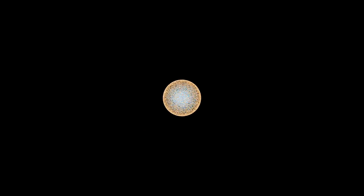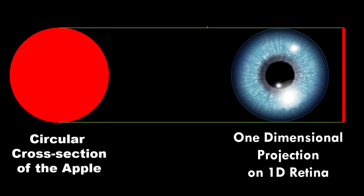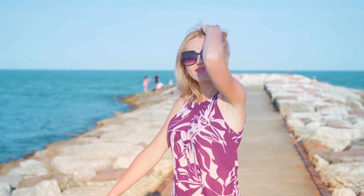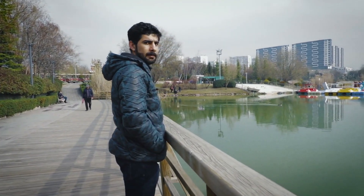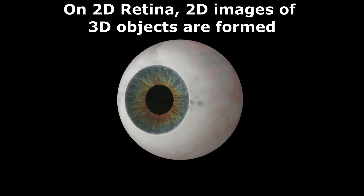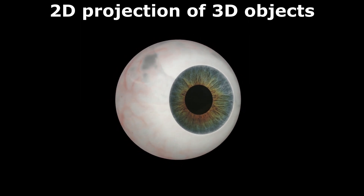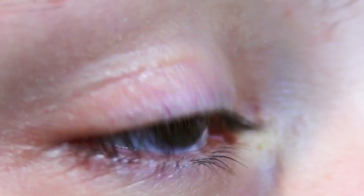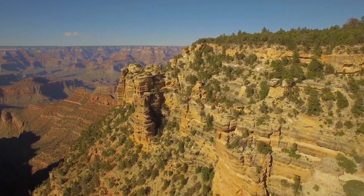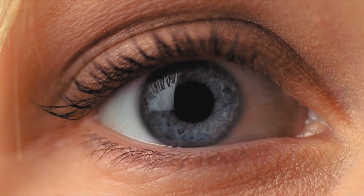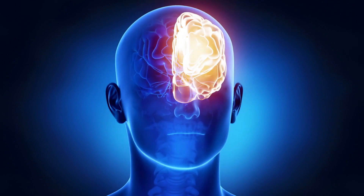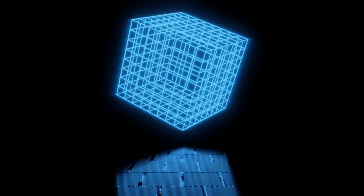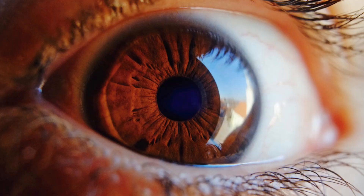2D beings would have a 1D retina in their eyes, so they would not see the apple as a growing circle. Actually, the 1D projection of the circle would be projected on their 1D retina. Let me explain how we see our 3D world with our eyes. We are 3D beings and we have a 2D retina. On this 2D retina, 2D images of 3D objects are formed — this is the 2D projection of the 3D objects. Our brain is smart enough to create a 3D model of the object from this 2D projection. The brain gathers 2D information like lighting, shadow gradient, and perspective, then after processing it, creates an image with depth. Therefore, we cannot see 3D objects in their entirety as we only get a 2D projection of the 3D objects on our 2D retina.